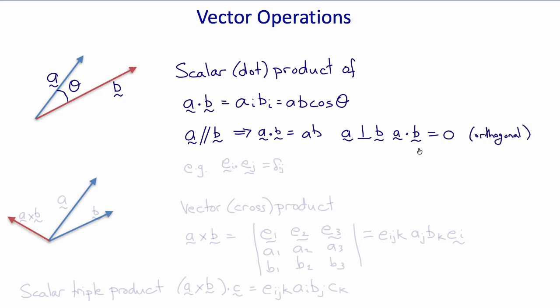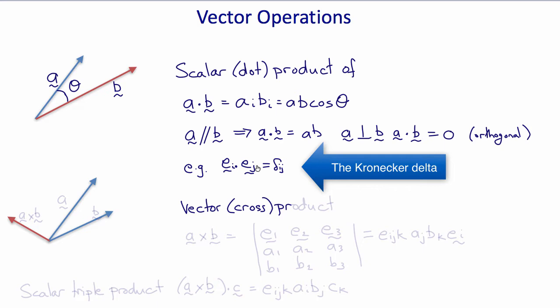For example, if we take the dot products between all of the base vectors with each other, then we get ei dot ej, which is delta ij. That is, when ei is dotted with itself, e1 dotted with e1 is one. E1 dotted with e2 is zero. So every time a unit vector is dotted with itself, you get a one. Every time it's dotted with one of the other unit vectors, you get a zero. So therefore, in general, ei dot ej is equal to delta ij, the Kronecker delta.